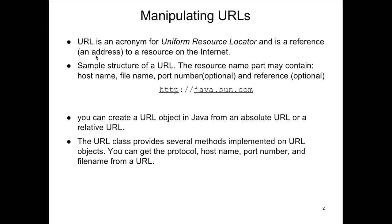The URL is an acronym for Unified Resource Locator. Unless you just crawled up from under a rock, you've probably been using the Internet for a long time. Technically, the URL is a resource locator, which means it can get files — Word files, PowerPoint files, HTTP-compatible HTML files — depending on what you're getting. The sample structure of the URL contains the resource name part, which includes the host name, the file, the portion, and the option. It's really an HTTP protocol.